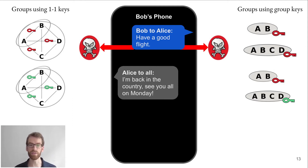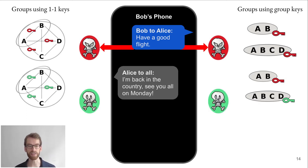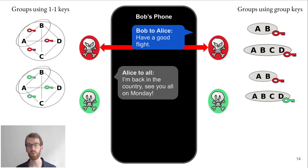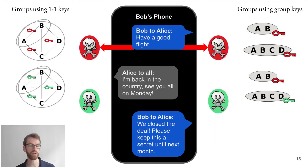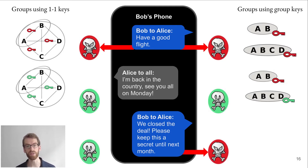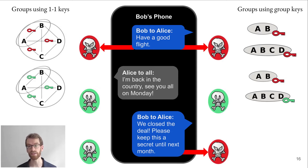Now let's look at the security of this message. Due to the update, this message is actually secure because Alice has updated her key material and the adversary does not have the right key material to decrypt it. However, if Bob now sends a message to Alice saying that they have closed some secret deal, there is a difference between the two paradigms. On the left paradigm using the one-to-one connections, the message is secure because Alice has essentially healed all of the subgroups of the A, B, C, D group, which includes the A and B group. On the right side, since the groups are independent, the previous update has done nothing to secure the connection between A and B.